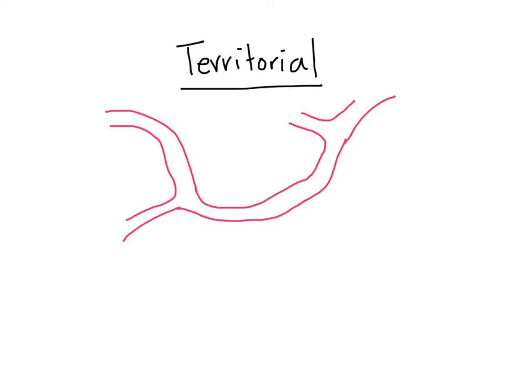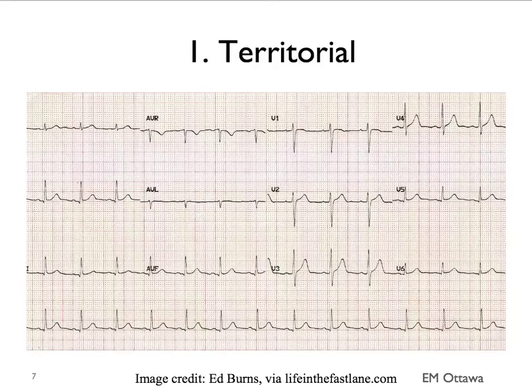First, territorial. Each coronary artery and its branches supply a specific area of the heart. If one of the arteries or branches is blocked, it makes sense that the entire territory of the heart supplied by that branch will not be getting oxygen — the whole territory is affected. So when we're looking at ST elevations, we want to look at them in territories.